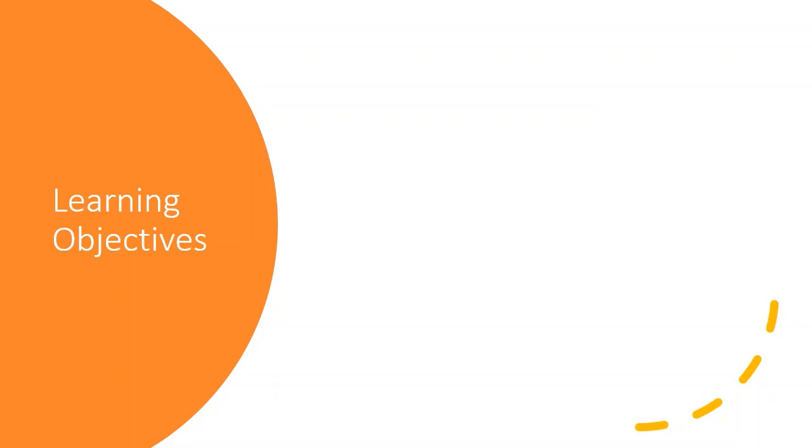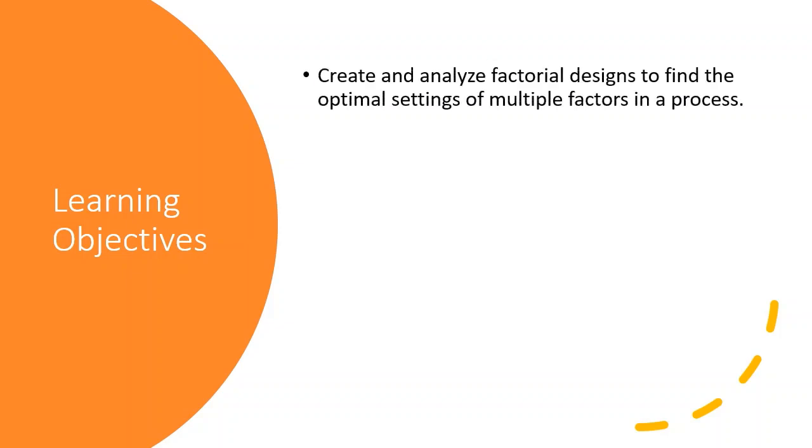Here are the concepts we're learning in this chapter. So we create and analyze factorial designs to find the optimal settings of multiple factors in a process. You know that many factors go into producing the most durable paint, the strongest alloy, or the quickest customer service resolution. Factorial designs offer an organized approach to analyzing these different factors with the goal of finding the best combination of settings.